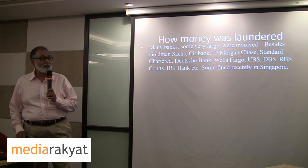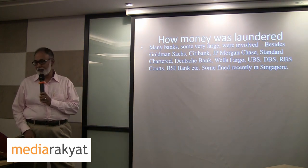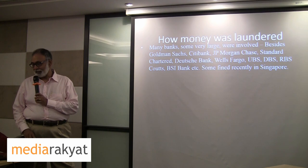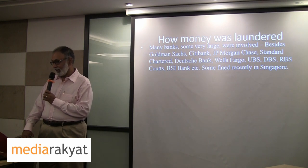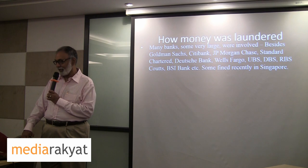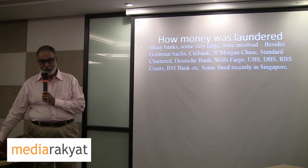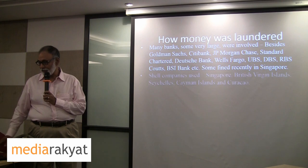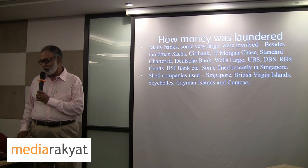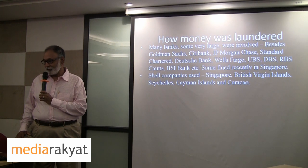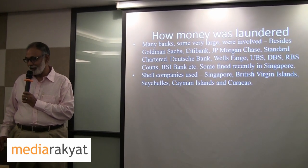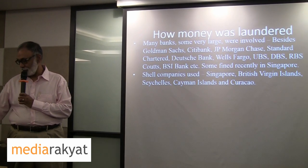The money was laundered through a lot of big-name banks. Many large banks were involved: besides Goldman Sachs, there were Citibank, JP Morgan Chase, Standard Chartered, Deutsche Bank, Wells Fargo, UBS, DBS, RBS Coutts, BSI Bank, etc. Some were fined recently and some had their licenses withdrawn in Singapore. Shell companies were used in many cases, including in Singapore, British Virgin Islands, St. Kitts, Cayman Islands, and Curaçao.